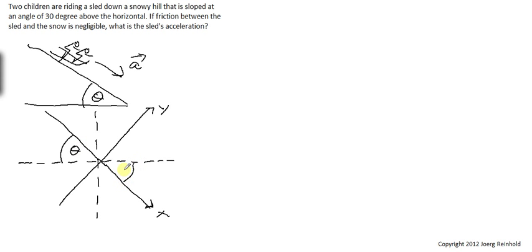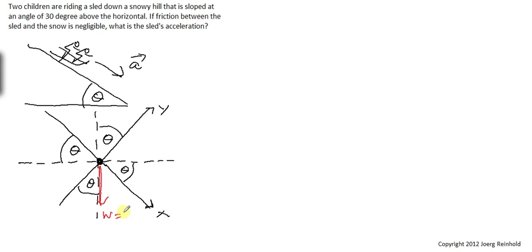Which means also this here is the angle theta. These are two intersecting lines. We can identify also that we have the angle theta here again, and also this is the angle theta. The sled in the diagram now is just the mass at the center of the coordinate system.